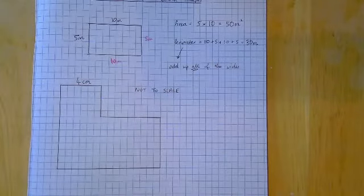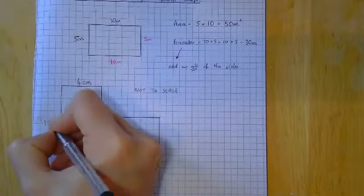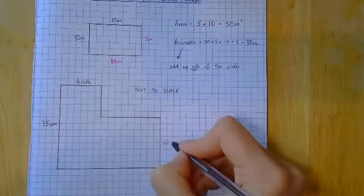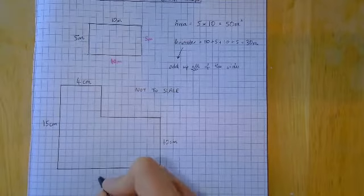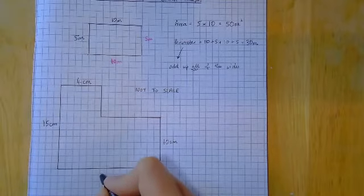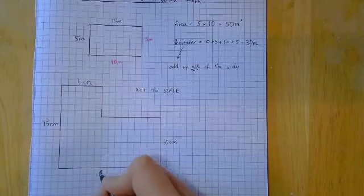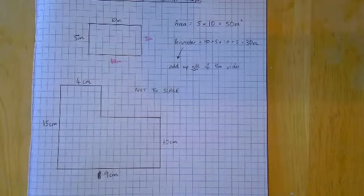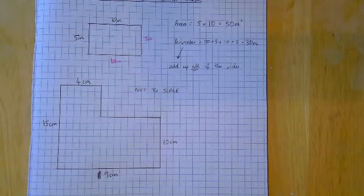These pictures are what we call not to scale. That's something that you'll see a lot in your exam. Not to scale, meaning it's kind of roughly right, but we haven't measured it. Let's say that this is 15 centimetres. Let's say that's 10 centimetres. And let's say this one is nine centimetres.